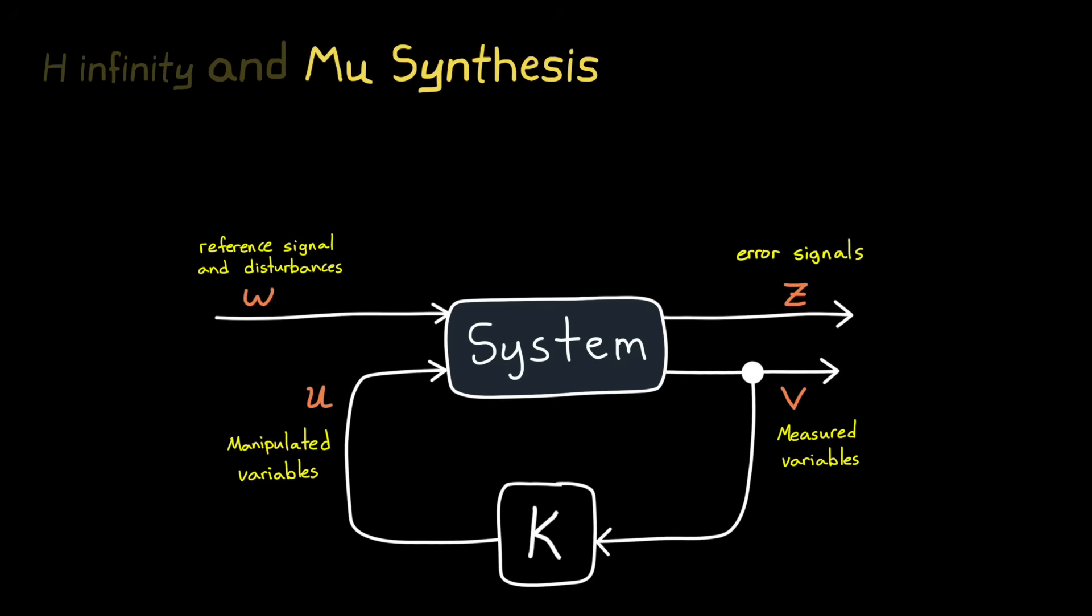And mu synthesis takes this a step further and allows you to also specify structured uncertainties in your system itself and then account for them. So basically, if you understand where uncertainties exist in your model and you can bound them within some limits and then include them in the tuning process so that the controller guarantees stability and performance across the entire uncertain range. In this way, mu synthesis is designed to be robust to both external disturbances and internal uncertainties.